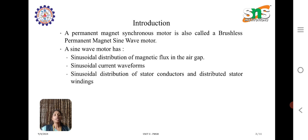A permanent magnet synchronous motor is also called a brushless permanent magnet sine wave motor since it is an AC input motor. A sine wave motor has a sinusoidal distribution of magnetic flux in the air gap, sinusoidal current waveforms, and sinusoidal distribution of stator conductors with distributed stator windings.